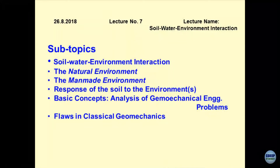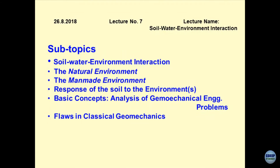With this in view, we will first deal with the definition of soil-water-environment interaction — the natural environment and how human activities have modified it to a man-made environment. We will understand what are the components of these two, and then of course the response of the soil to different types of environments: elevated temperatures, high pressures, low pressures, low temperatures, different types of chemicals coming in contact with the soil in a saturated, dry, or semi-saturated form.